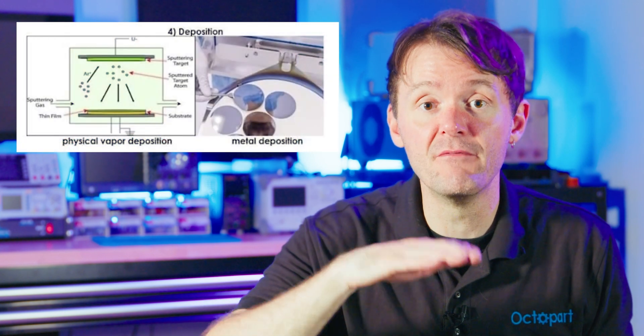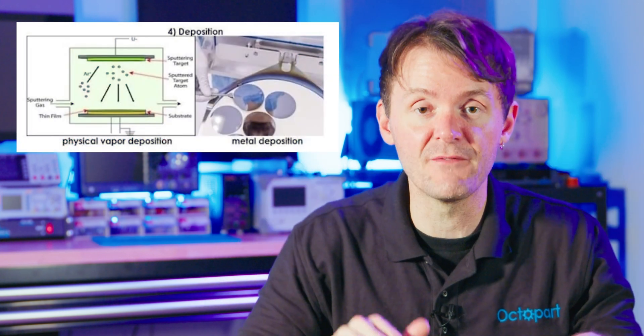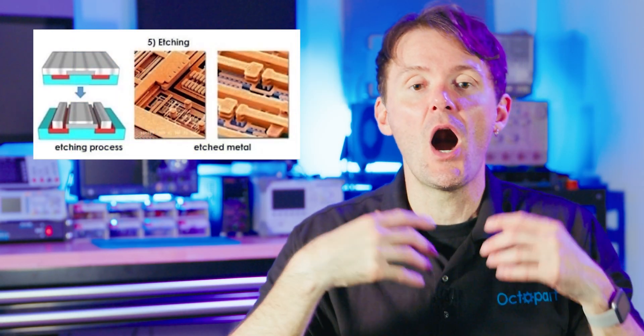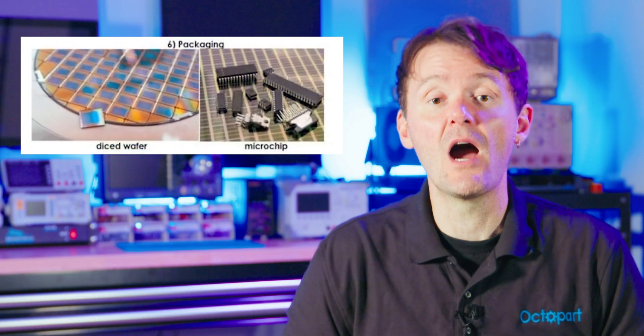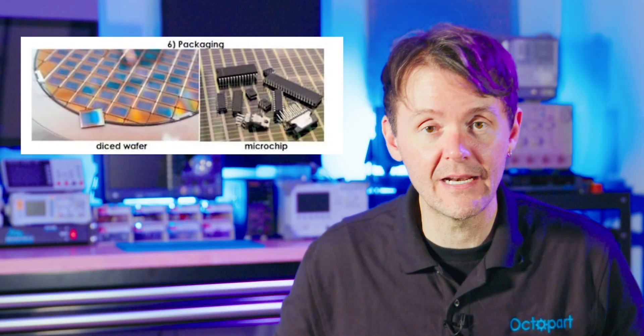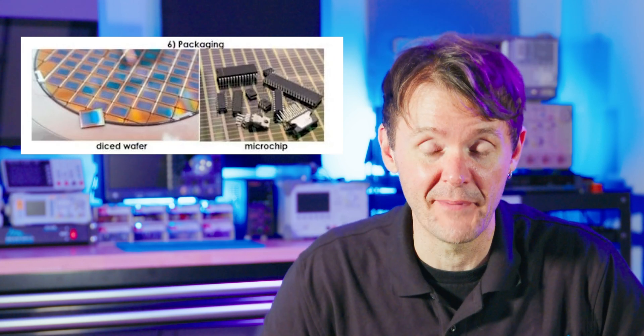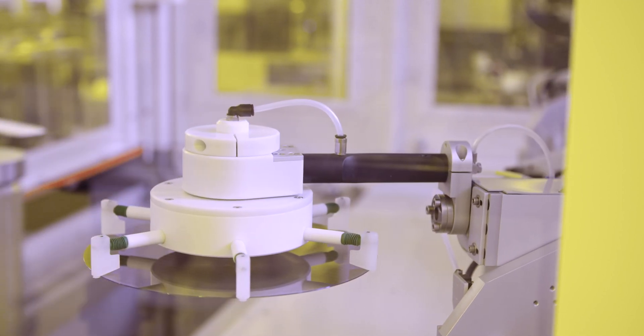Then there's deposition: thin layers of various materials are deposited onto the wafer to form different components of an electronic circuit, using techniques such as chemical vapor deposition (CVD) or physical vapor deposition (PVD). Next is etching: unwanted material is removed using chemical or plasma etching techniques, allowing for precise shaping of the semiconductor components. Finally, packaging — once the semiconductor devices are formed, they must be packaged to protect them from environmental factors and to facilitate their integration into electronic components. It's a whole industry in and of itself.